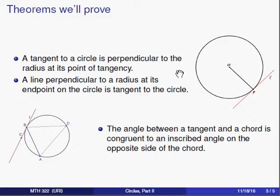We'll also show kind of a converse to this statement. We'll show a line that is, by definition, perpendicular to it, then that perpendicular line will have to be a tangent to the circle.